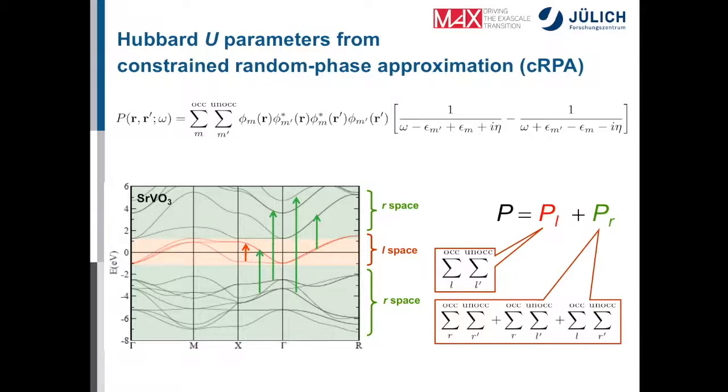But now we can classify these virtual excitations into excitations that happen only in our correlated subspace like this one, the red one, or the ones that somehow involve the other electrons that are not taken into account in the correlated subspace. For example, the excitations going from the rest here into the rest or the rest space into the correlated subspace or from the correlated subspace into the rest. And in this way, by this classification, we can write the polarization function as a summation over two terms, the PL, the red ones and the PR, all the green ones. And the PR is, of course, the screening of all the other electrons.